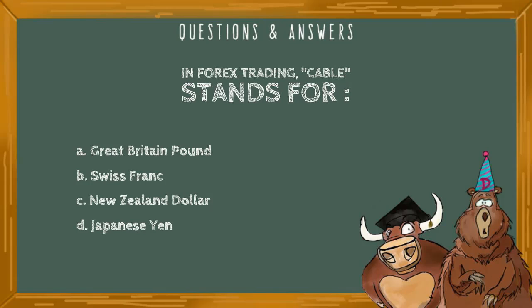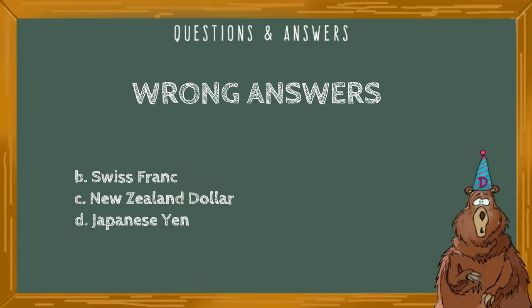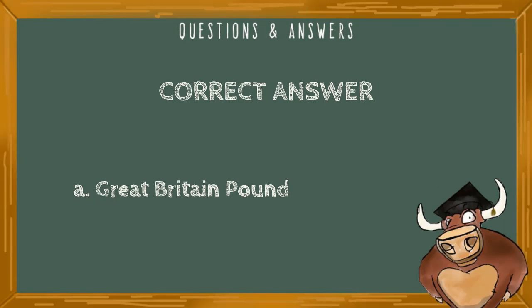In forex trading, 'cable' stands for: A) Great Britain Pound, B) Swiss franc, C) New Zealand dollar, or D) Japanese yen. The wrong answers include B) Swiss franc, C) New Zealand dollar, and D) Japanese yen. The correct answer is A, the British Pound. Cable refers to the underground telegraph cables that once ran from Great Britain to the United States.